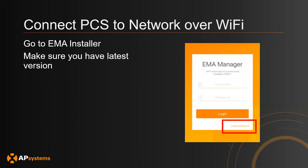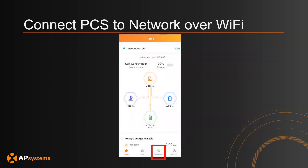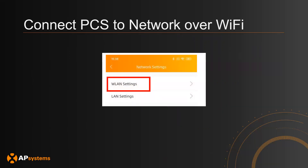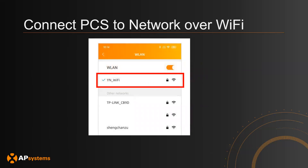Now that you've connected to the PCS's hotspot, go to the EMA Installer app, make sure you have the latest version, and click on Local Access on the bottom left corner. You should see a view like this. Go to Workspace, then Network Settings, and you will see that view. Click on WLAN Settings, click the top slider button to activate Wi-Fi connectivity, and select the network you want to connect to. Enter the password, and once successfully connected, you should see a checkmark next to the Wi-Fi network.